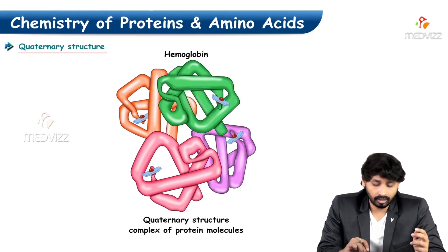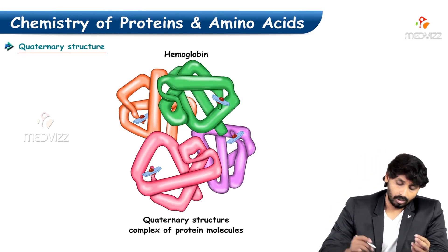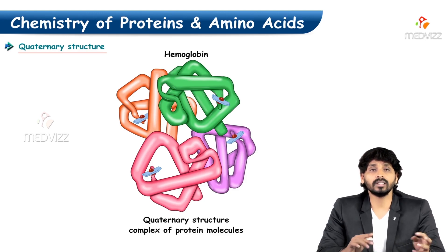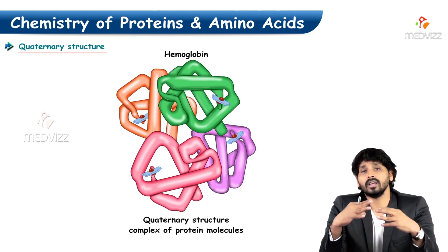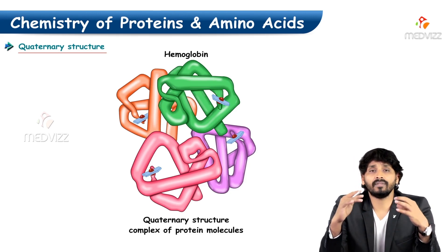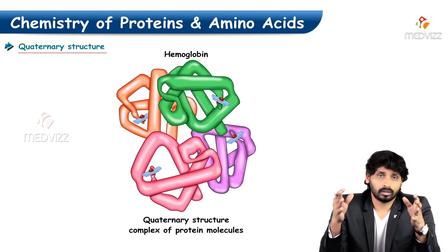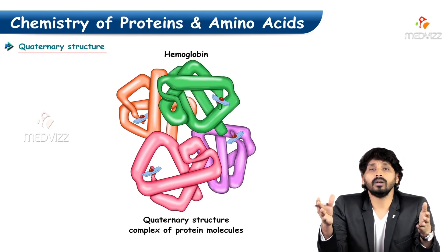Coming to the Quaternary Structure — a beautiful, colourful example here. The green, purple, pink, and orange colours indicate that Quaternary Structure is exhibited by proteins which have more than one polypeptide. That means Quaternary Structure-exhibiting proteins carry more than one polypeptide chain.